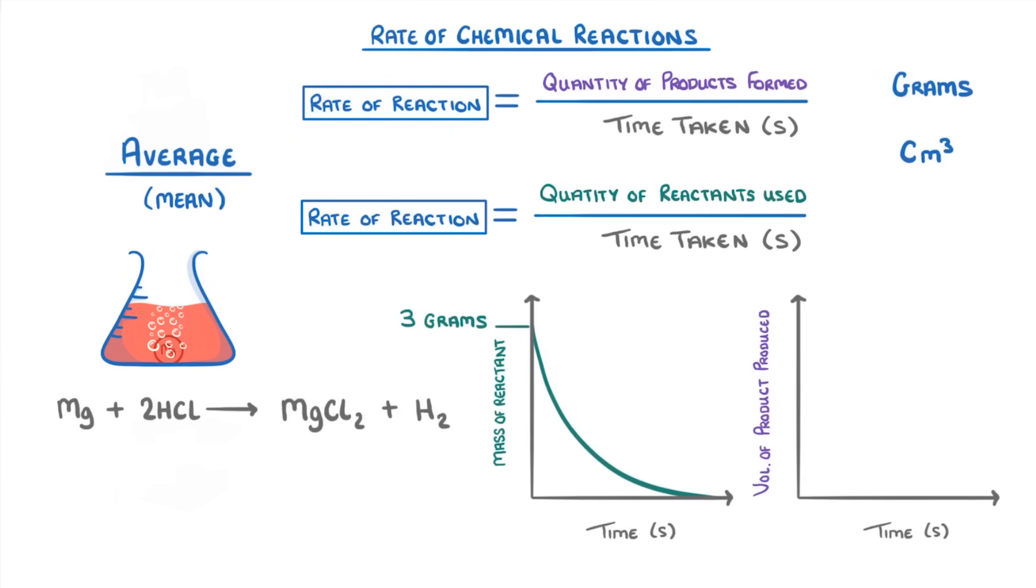Meanwhile for our other graph, we know that at the beginning of the reaction we have no products, so it starts at 0. However, it very quickly increases as lots of hydrogen is produced at the beginning of the reaction. Then as the reaction progresses, the graph becomes less steep and finally starts to plateau as we run out of magnesium.